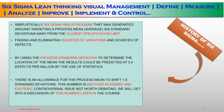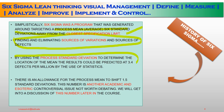Simplistically, Six Sigma targets a process average of six standard deviations away from the closest specification limit. It works by finding and eliminating sources of variation and defects. By using the process standard deviation to determine the location of the mean, the results can be predicted at 3.4 defects per million. There is also an allowance for the process mean to shift 1.5 standard deviations — this is an academic and somewhat controversial issue we will discuss later.